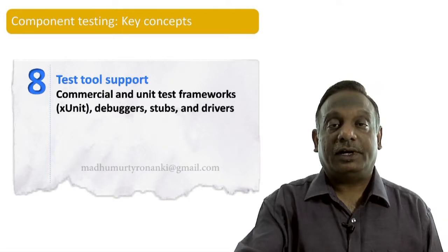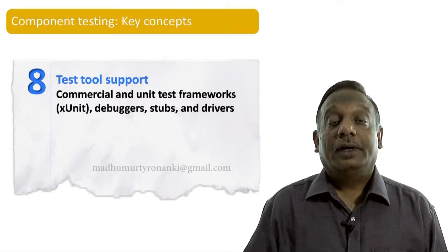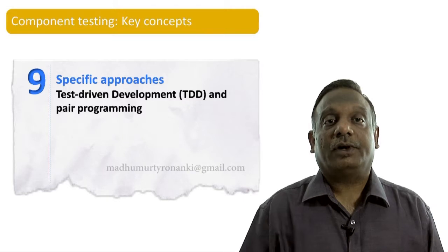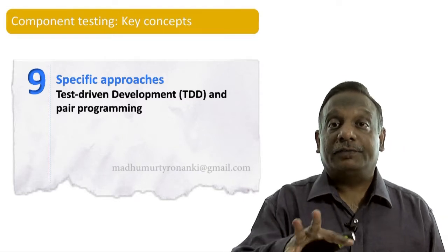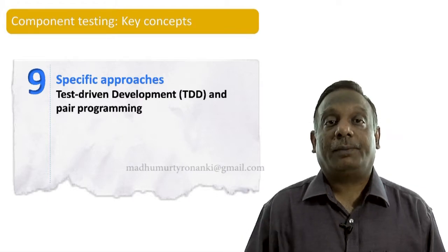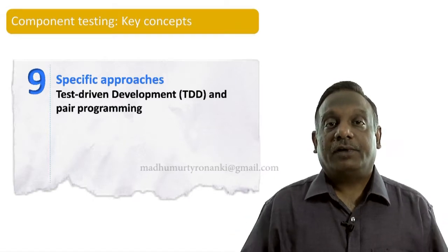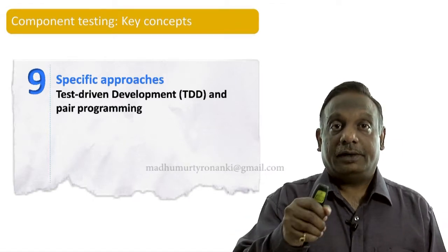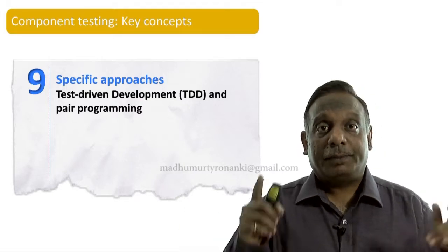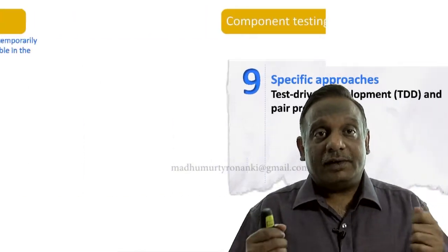Stubs and drivers are among the tools needed to do unit level testing. The last item — specific approaches for unit level testing — includes test driven development and pair programming, both coming from the agile world. So these are the nine items we describe for every test level. Please keep those in mind.